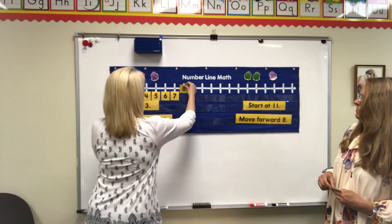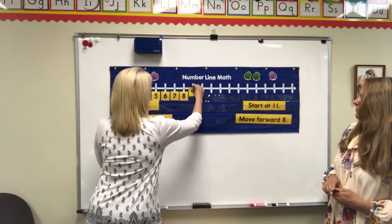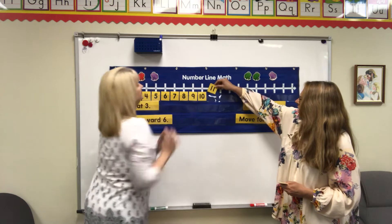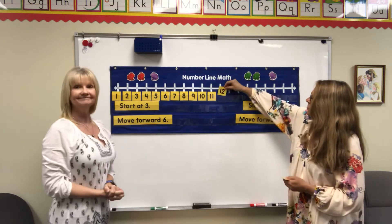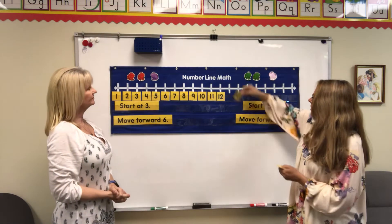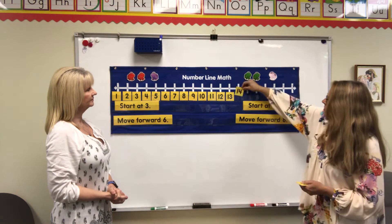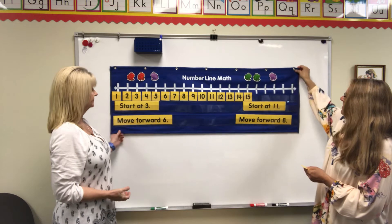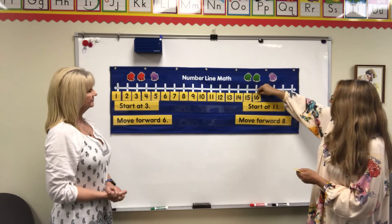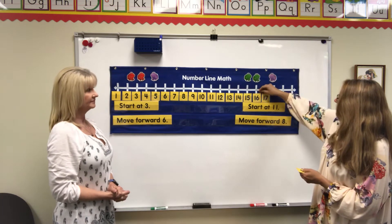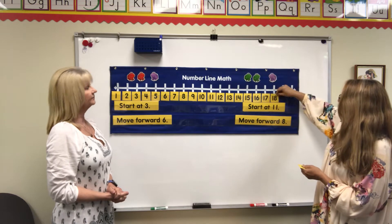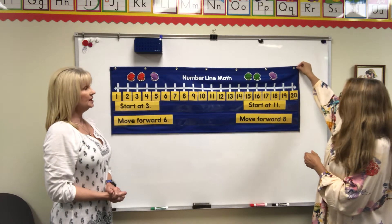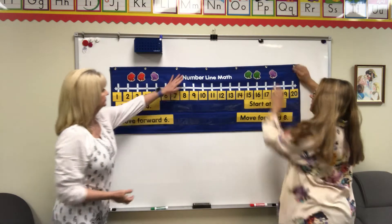8, 9, and 10, 11, 12, 13, 14, 15, 16, 17 — getting up there — 18, 19, and 20. And it tells us here what it wants us to do, and Miss Trish is going to start out by moving her frog.